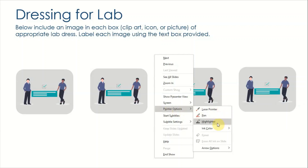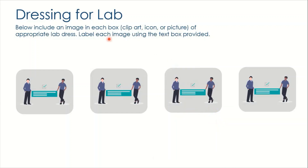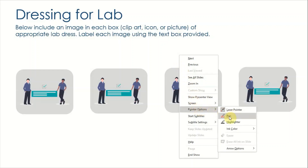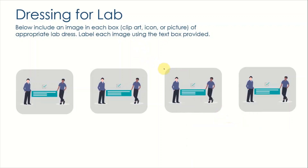Under Pointer Options, you'll see Laser Pointer, Pen, and Highlighter, with different ink color choices. Even without a physical clicker, you can use the Laser Pointer to highlight areas you're discussing. You can also select Pen to draw or annotate on the slide — useful if you're a teacher explaining something to students online or in class.